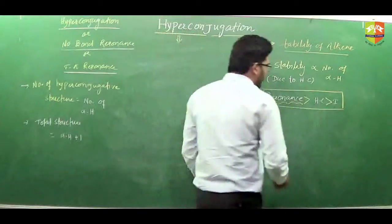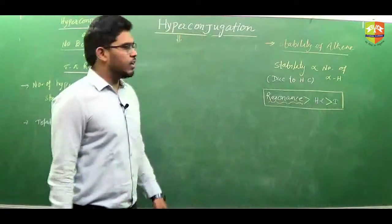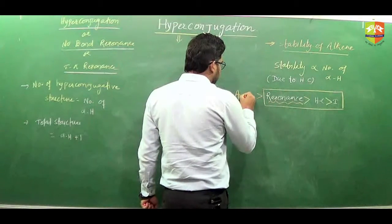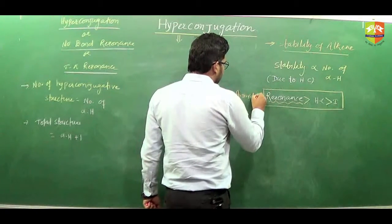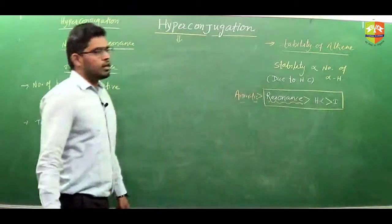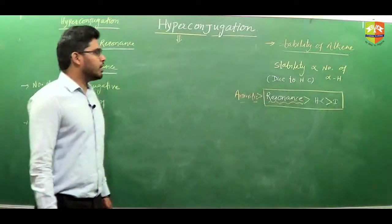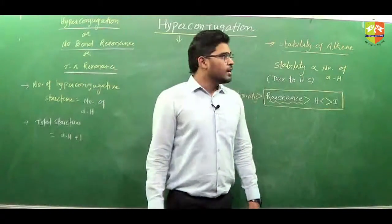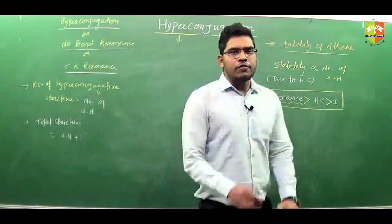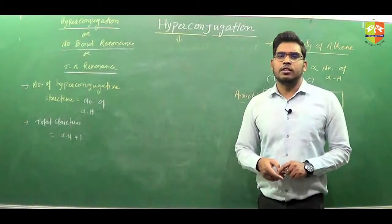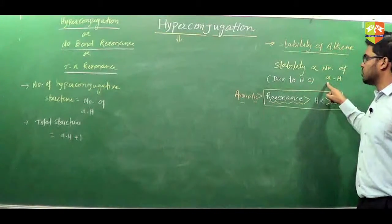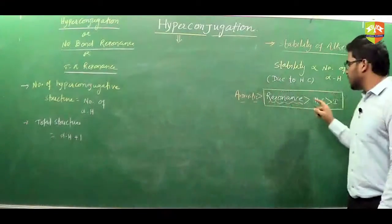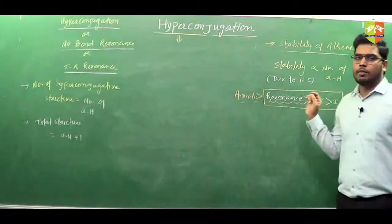The inductive effect (I effect) is the least effect. And all these effects are dominated by aromaticity. The aromatic effect is the most powerful effect and will dominate all other effects — resonance, hyperconjugation, or inductive effect. So to summarize: for alkene stability, if only hyperconjugation is possible, calculate number of alpha hydrogens. If resonance is present, resonance is the dominating effect. If only I effect is there, then hyperconjugation will be the dominating effect.